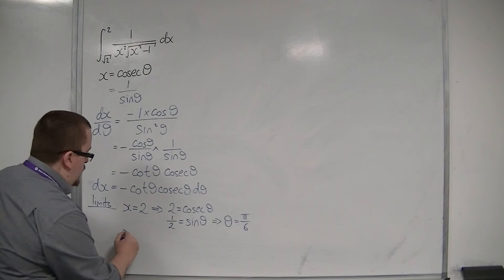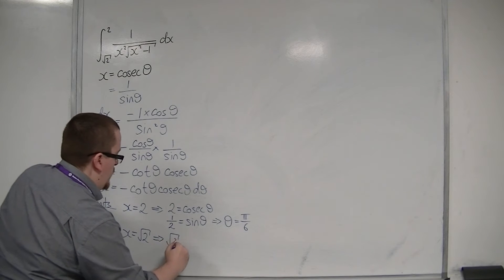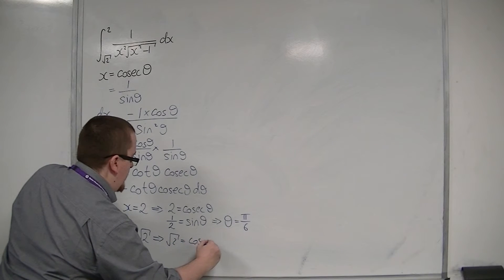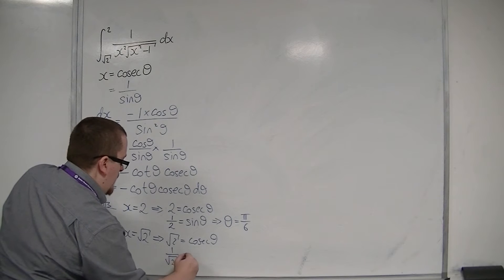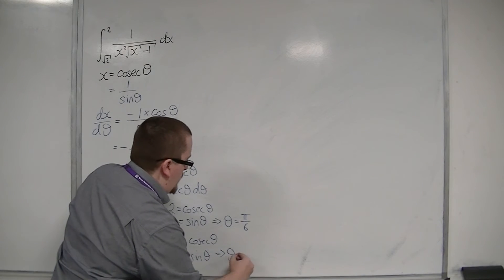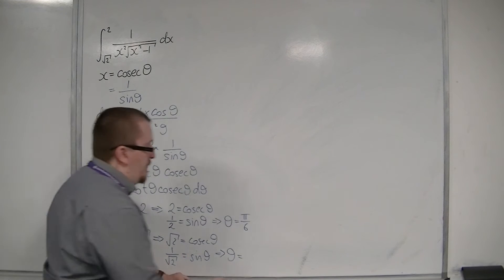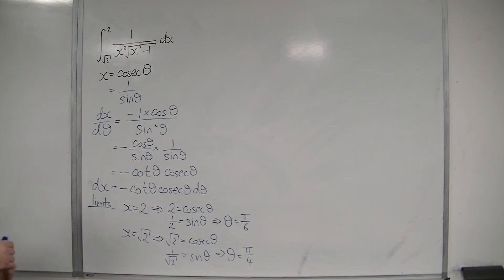Now I'm going to do the same thing with root 2. Root 2 is equal to cosec theta, so 1 over root 2 is equal to sine theta. So theta, if you inverse sine both sides, you get pi over 4. So we now have limits changed as well.